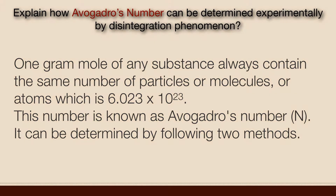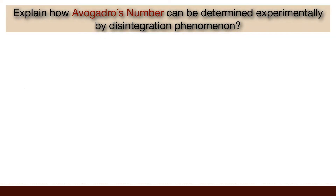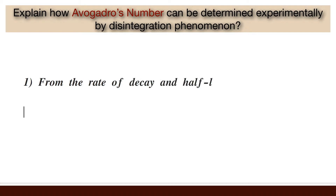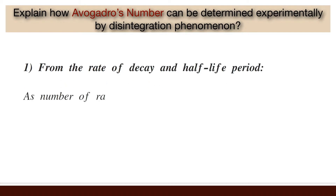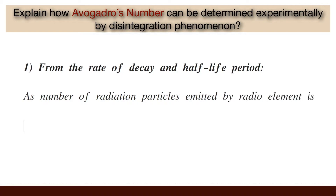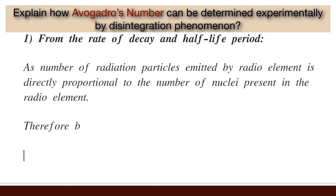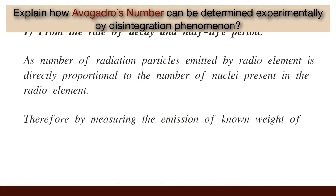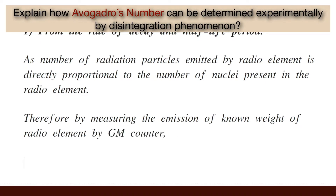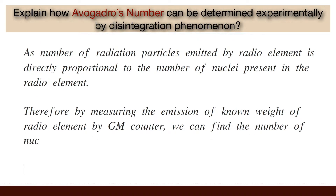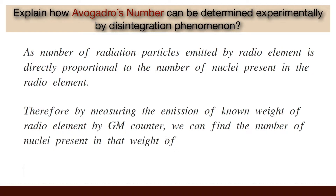First, from the rate of decay and half-life period. The number of radiation particles emitted by a radio element is directly proportional to the number of nuclei present in the radio element. Therefore, by measuring the emission of a known weight of radio element using a GM counter, we can find out the number of nuclei present in that weight of radio element.